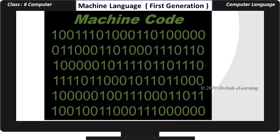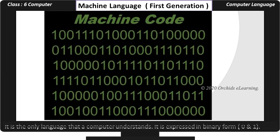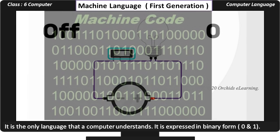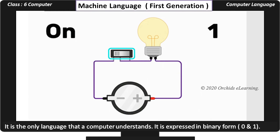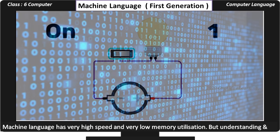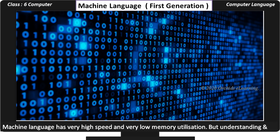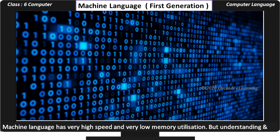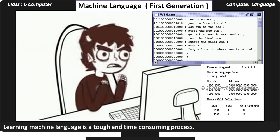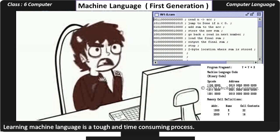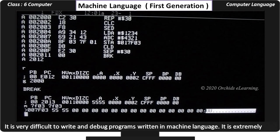Machine Language — First Generation. It is the only language that a computer understands. It is expressed in binary form, that is, zero and one, where zero means off state and one means on state. Machine Language has very high speed and very low memory utilization. However, understanding and learning machine language is a tough and time-consuming process. It is very difficult to write and debug programs written in machine language.